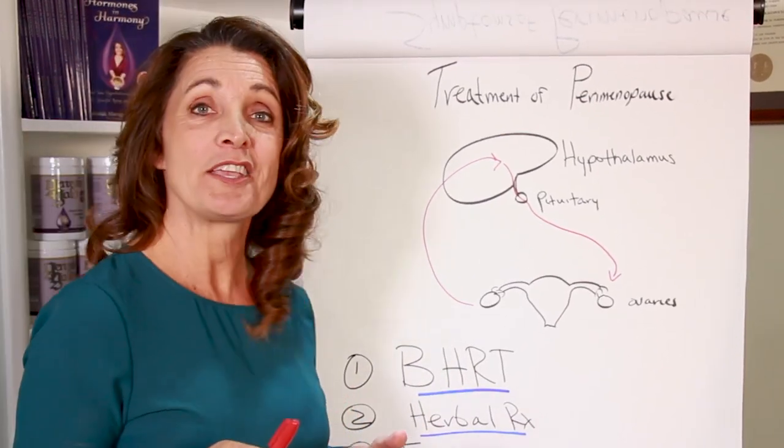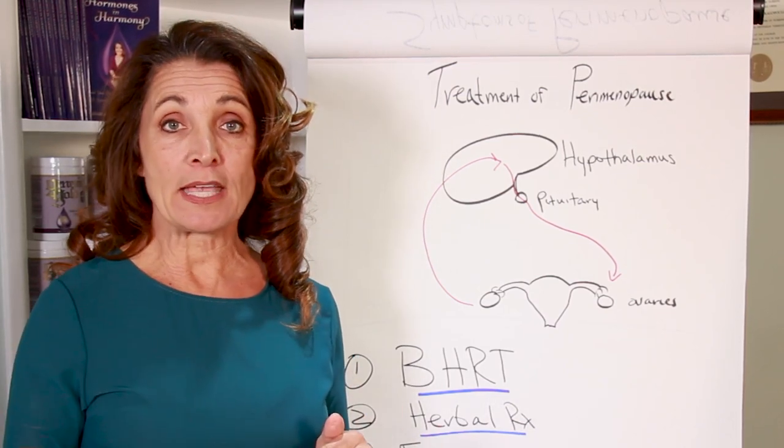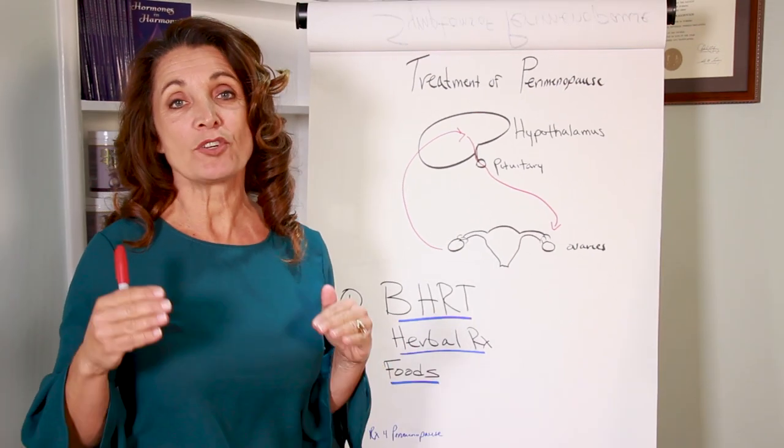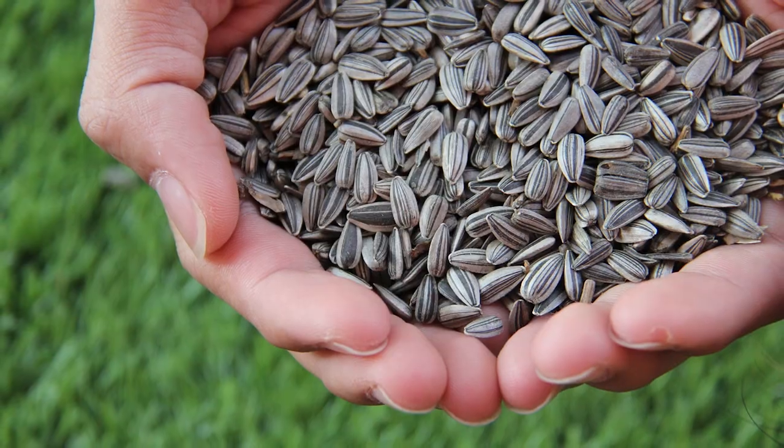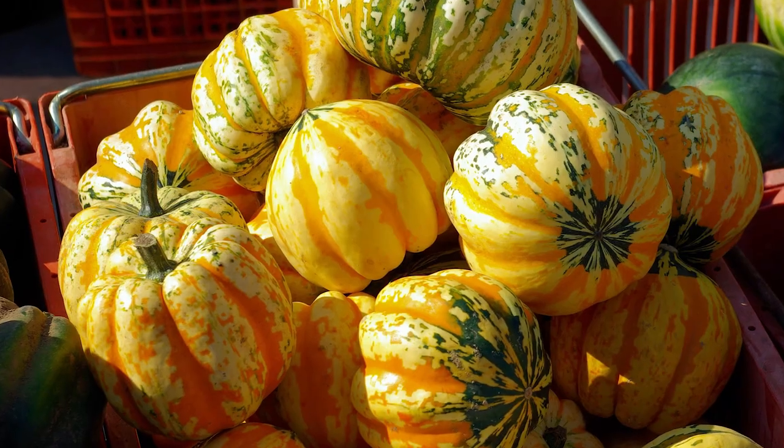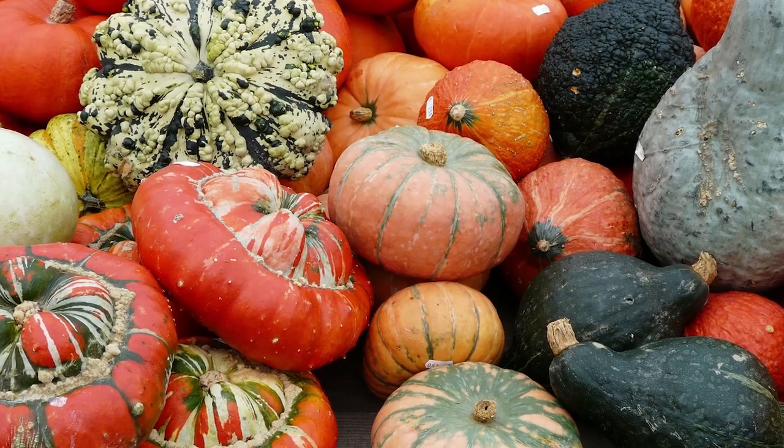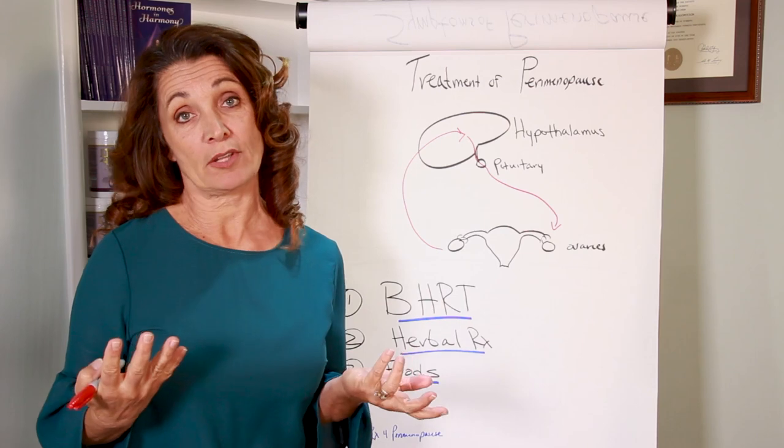Now the third thing you can do is add foods into your diet that actually help to regulate both progesterone and estrogen. Some of the progestational foods are things like pumpkin seeds and sunflower seeds, orange squash like pumpkin as well as kabocha, and also butternut squash are really great ways to keep the progesterone levels balanced.